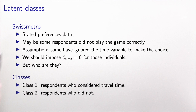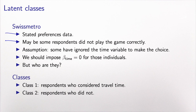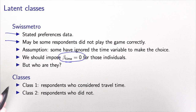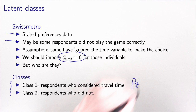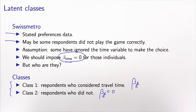Because I have stated preference data, I suspect that some respondents did not play the game correctly. The assumption I would like to test is that some people ignored the travel time variable to make the choice. If we knew who they are, we should impose beta time equals zero for them. But we don't know, because they didn't tell us. So we have two classes: class one is respondents who consider travel time, and for these people we need to estimate beta t; class two are respondents who did not take travel time into account, and for them beta t is imposed to be zero.